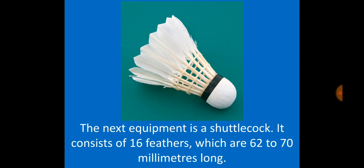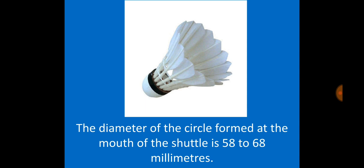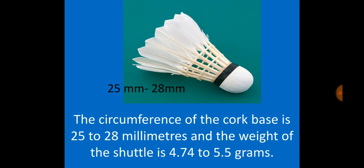The next equipment is the shuttlecock. It consists of 16 feathers which are 62 to 70 millimeters long. The diameter of the circle formed at the mouth of the shuttle is 58 to 68 millimeters. The circumference of the cork base is 25 to 28 millimeters, and the weight of the shuttle is 4.74 to 5.5 grams.